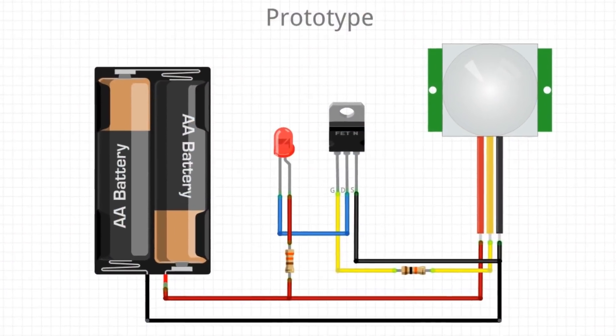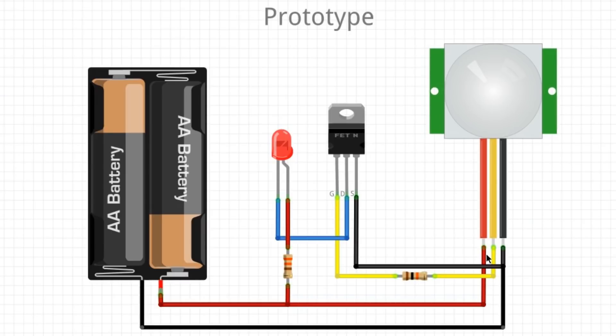Here's the schematic for the project. The motion sensor module has three pins: VCC, ground, and the middle pin is the data pin that goes through a 10k ohm resistor which goes to the gate of the MOSFET transistor.